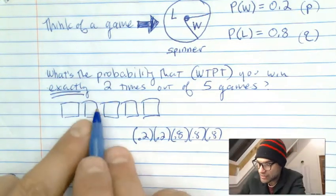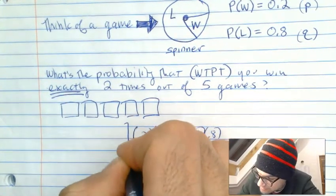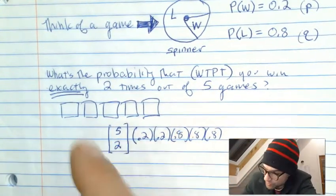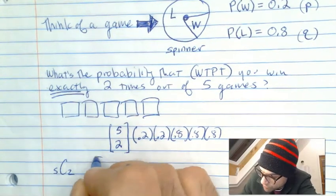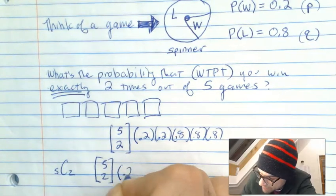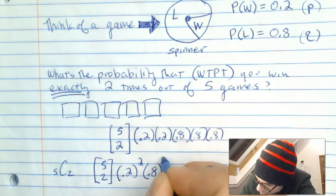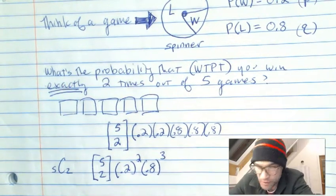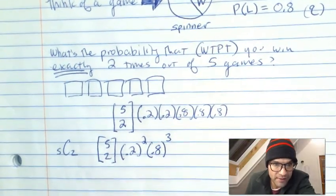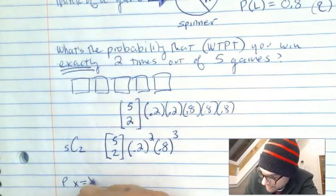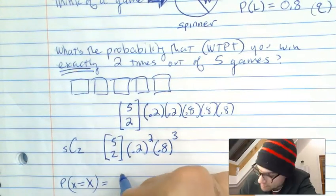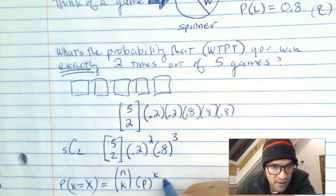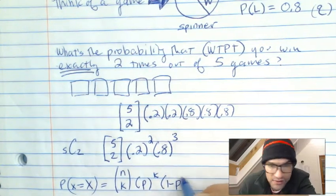I'd have to figure out how many ways can I choose the two winners out of the five games. That's five choose two. I have to win the game twice, but I also would have to lose the game three times. This is how you find the binomial probability. The formula says: the probability that your variable equals exactly X is N choose K, times the probability of success raised to K wins, times one minus that — your losses — to N minus K.